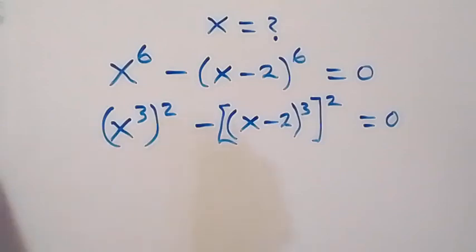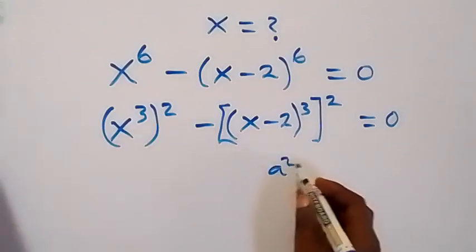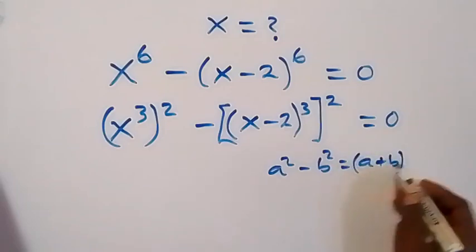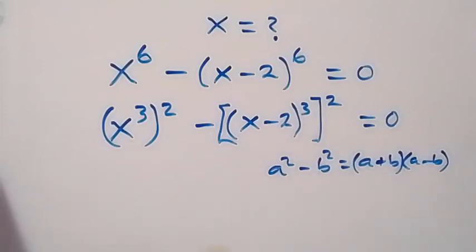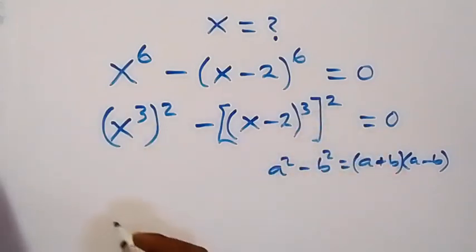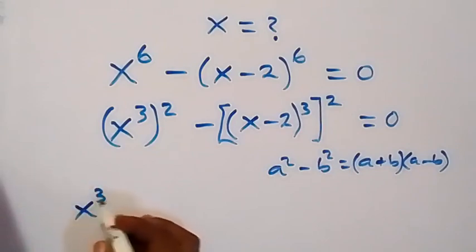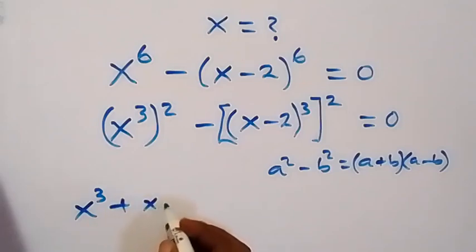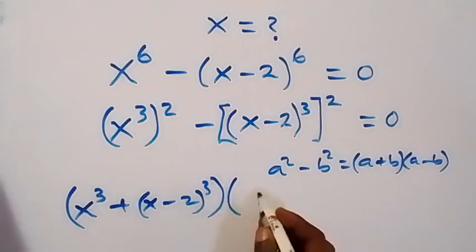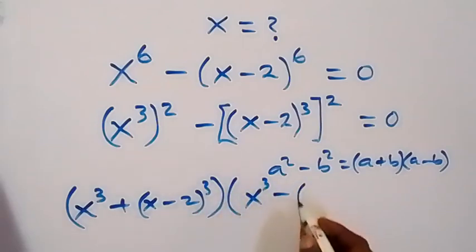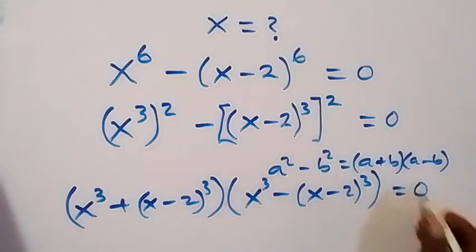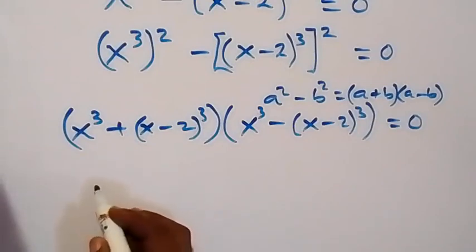What we have here follows the difference of two squares: a squared minus b squared equals (a plus b) times (a minus b). Here, a stands as x cubed and b stands as (x minus 2) cubed. So this becomes (x³ + (x−2)³) times (x³ − (x−2)³), equal to 0.